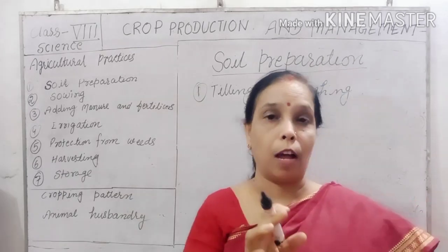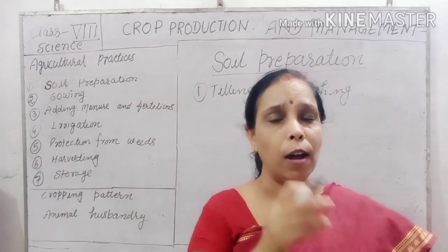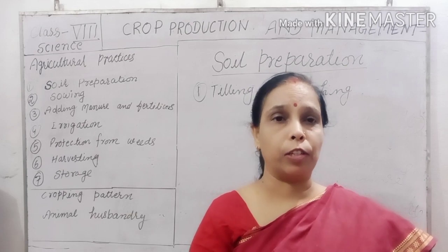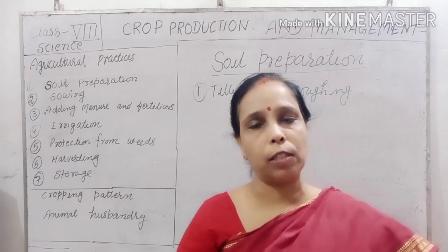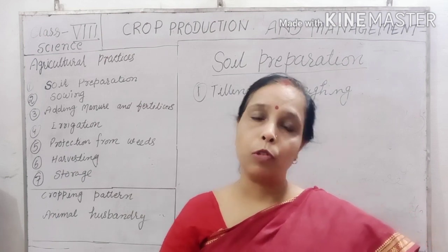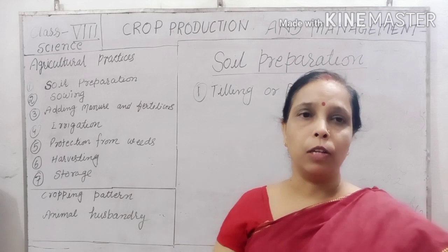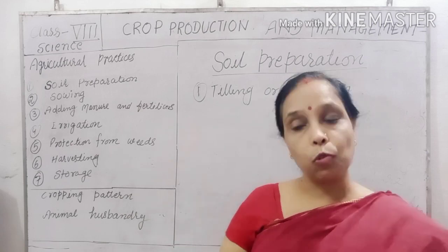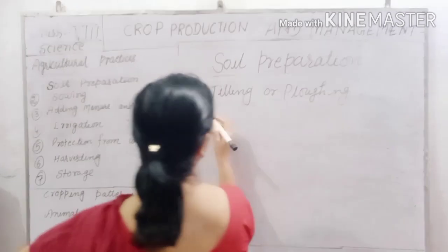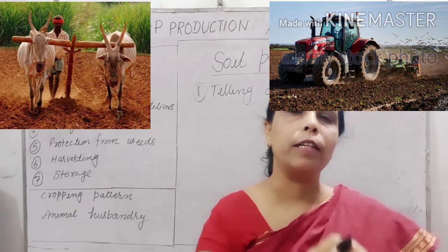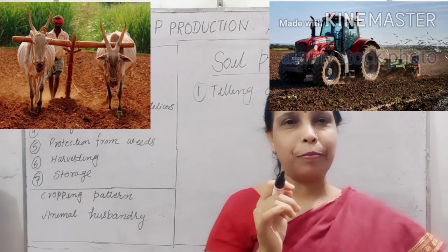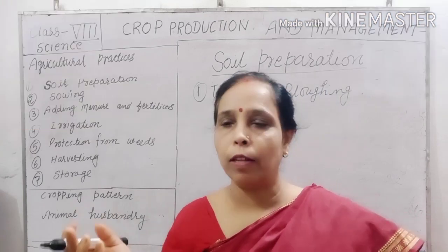The first point is soil preparation. It is the most important task and the first step for agriculture. Soil preparation means first tilling or plowing. Tilling or plowing means loosening and turning of soil with the help of a plow and other tools.